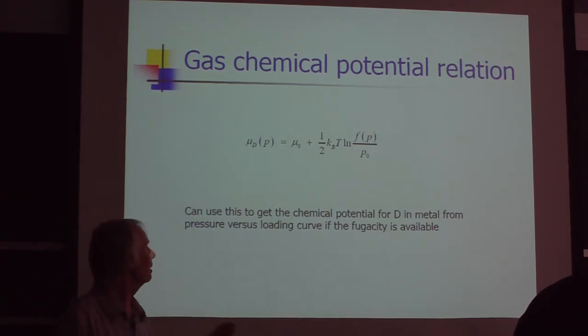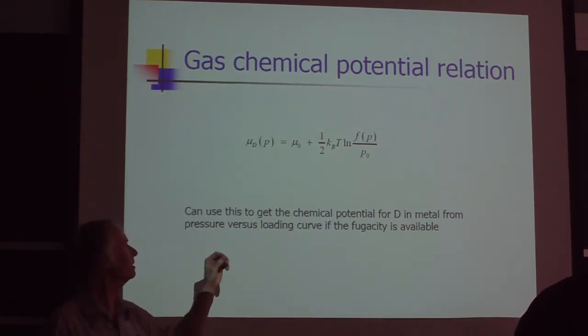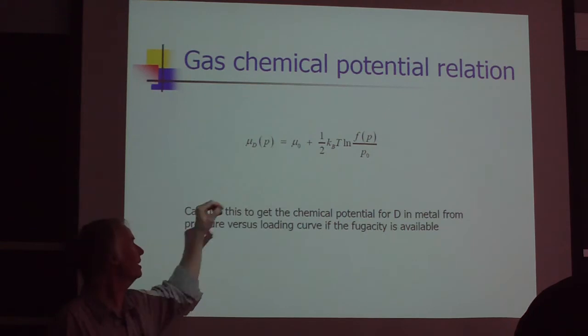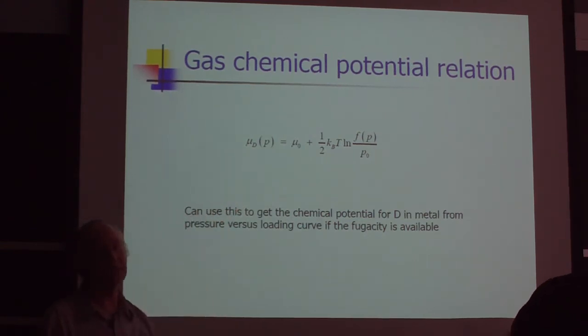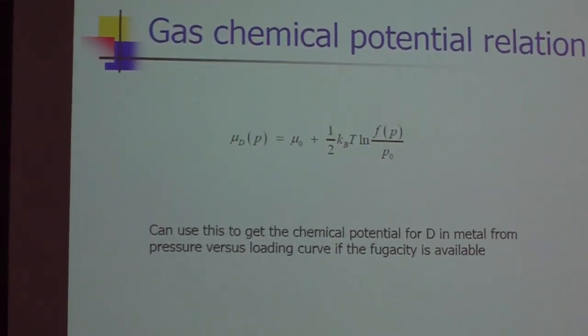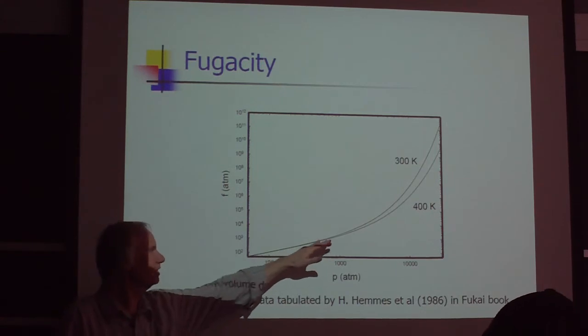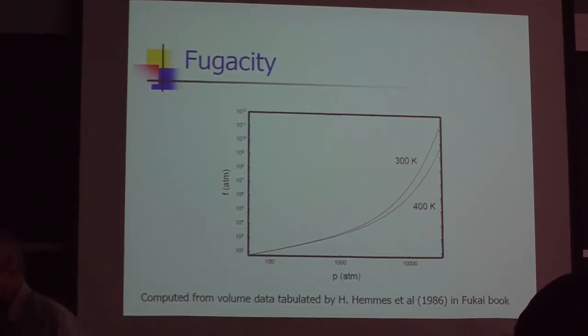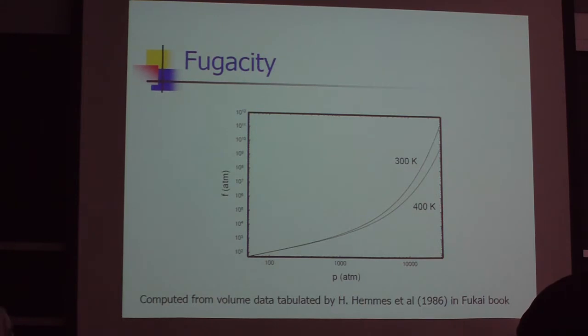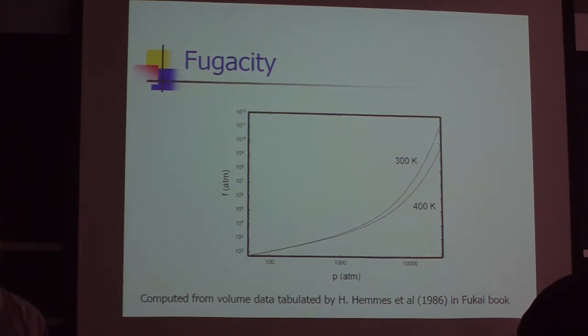Now if you know the pressure and you know the loading, if you know the fugacity, you can figure out the chemical potential. The fugacity at low pressure is sort of the same as the pressure, and at high pressure there's a difference. What is this all about? It has to do with deviations from ideal gas behavior.